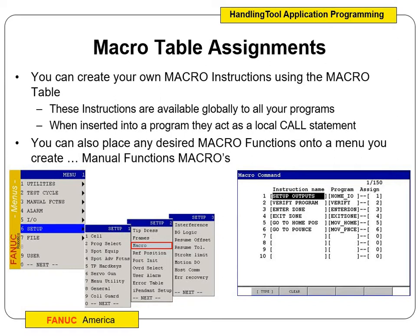You can create your own macro using the macro table. To get there, hit menu, go down to setup, go over to the second one, click on macro and hit enter. You can set up different variations for different macros. They are global to all of your programs, and when you put a macro into a program, we activate it as a call statement. We can also place any desired macro functions onto a menu.